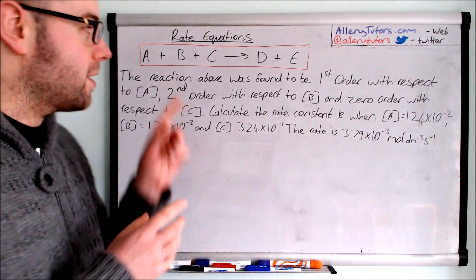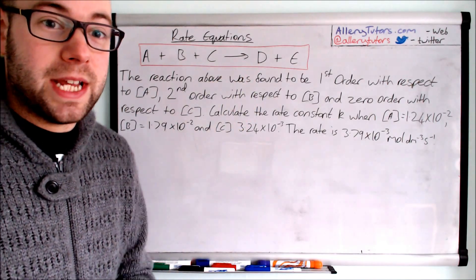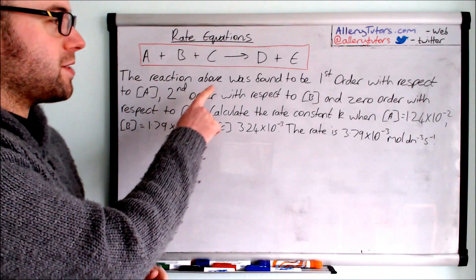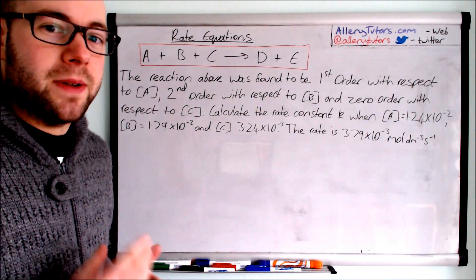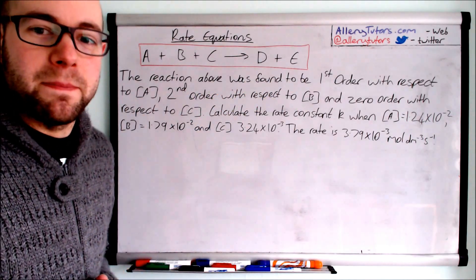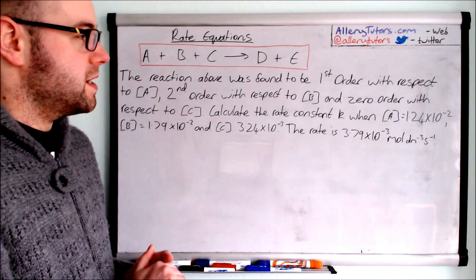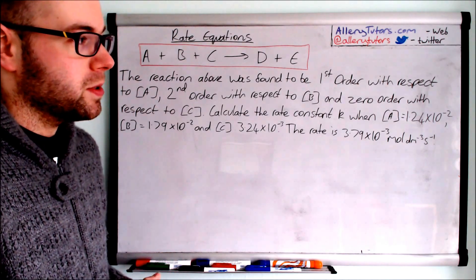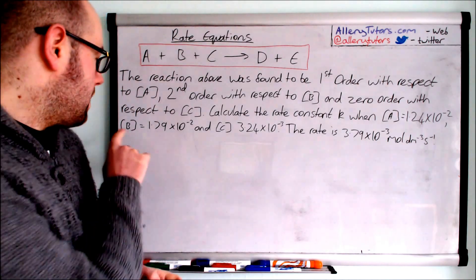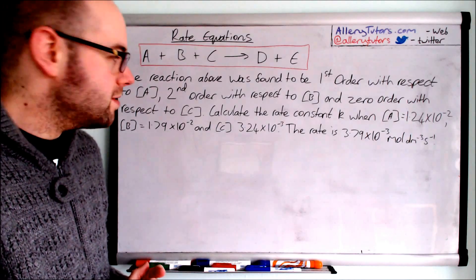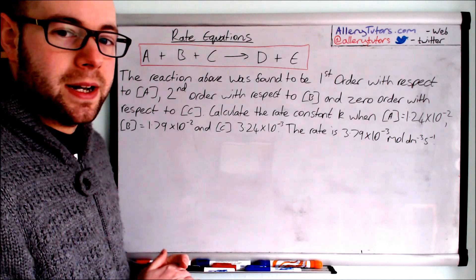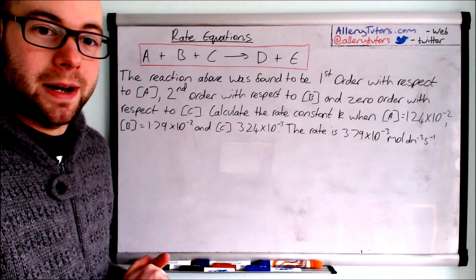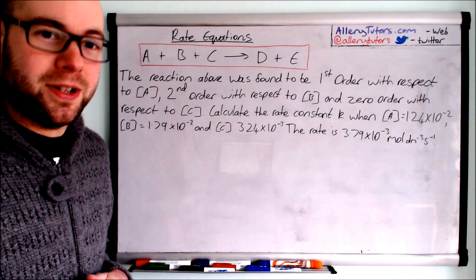We start with the equation A + B + C → D + E. The question linked to this equation states the reaction was found to be first order with respect to A, second order with respect to B, and zero order with respect to C. We need to calculate the rate constant k when [A] = 1.24×10⁻², [B] = 1.79×10⁻², [C] = 3.24×10⁻³, and the rate = 3.79×10⁻³ mol dm⁻³ s⁻¹.